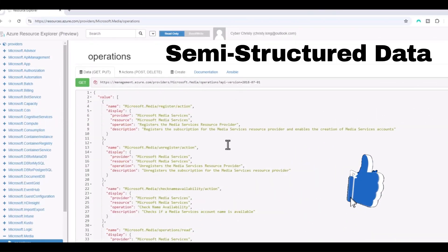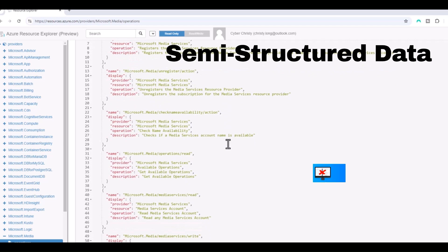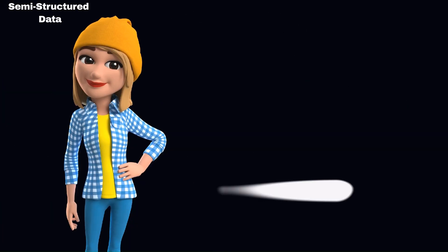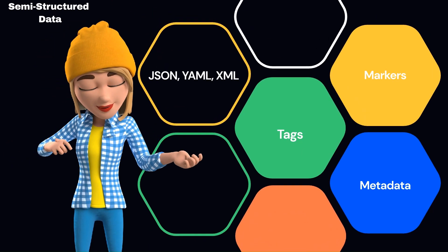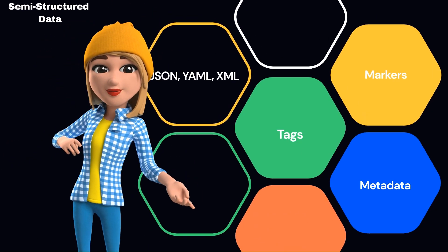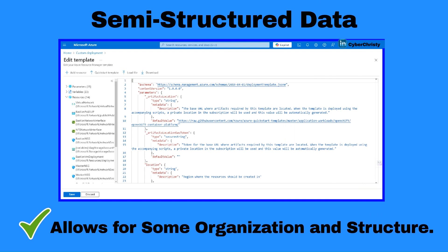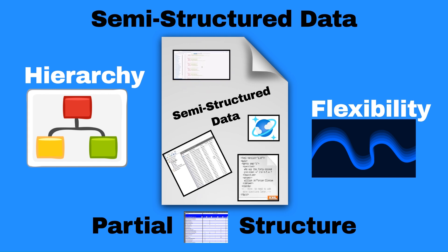Semi-structured data refers to data that doesn't conform to the structure of traditional structured data like relational databases. It often contains tags, markers, or other structural elements that separate and describe its elements, allowing for some organization and hierarchy. Examples include JSON, XML, log files, and NoSQL databases.